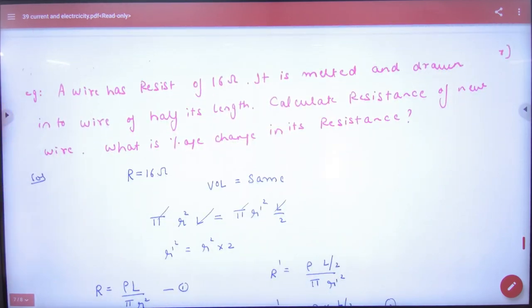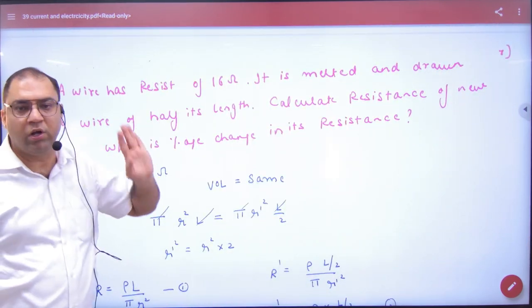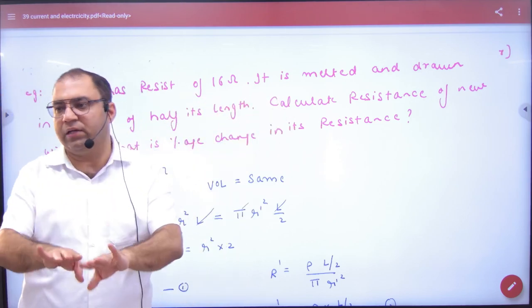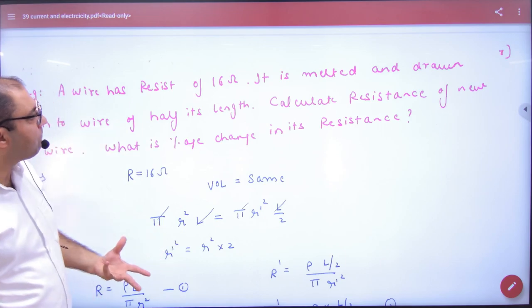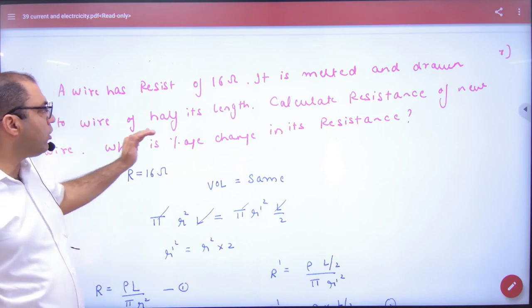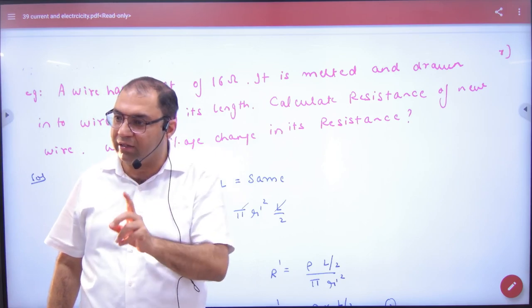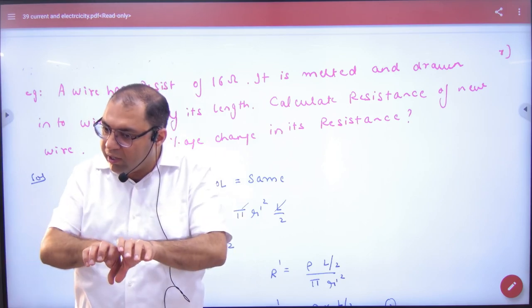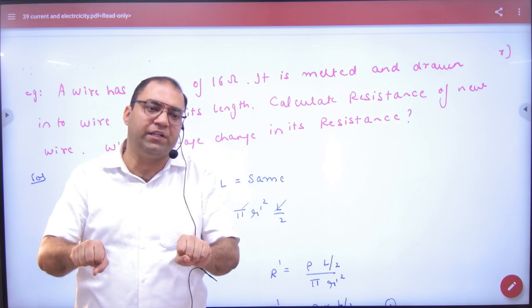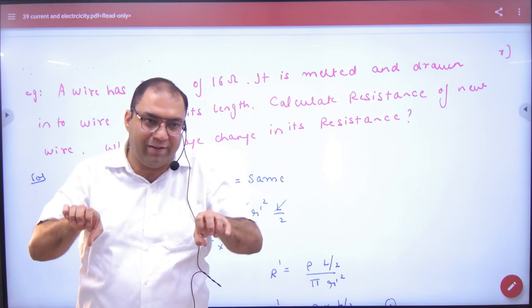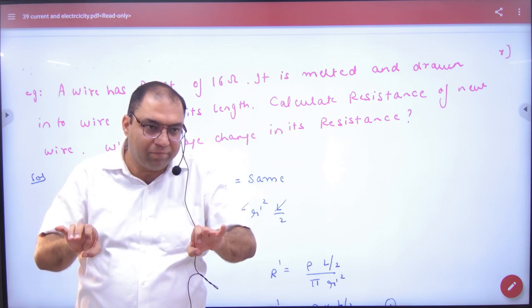Third, if you have a wire of 16 ohm, it is melted, it is folded, and drawn into wire of half its length. Now it is not cut, it is folded, and L/2 length wire made. If you are making a small length wire, it will be small. The radius will increase. Do you understand?